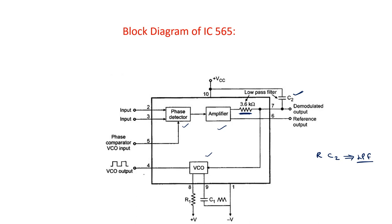The output of the VCO has to connect to one input of the phase detector, but that connection is not made internally. Pin 4 is where the output of the VCO can be taken, and pin 5 is where the second input for the phase detector can be applied. These two inputs are for the input signal Vs at frequency Fs. You can apply a single-ended input or a bipolar input — if single-ended, ground one of the inputs; if differential, apply it to two terminals.